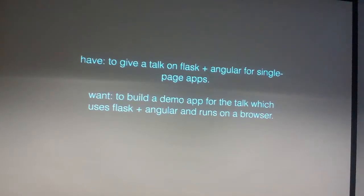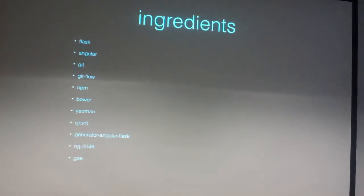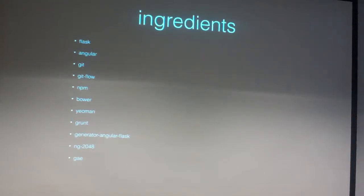I'm going to walk you through what I did and then show you the app at the end. In building this, I used Flask and Angular, also Git and GitFlow. For tools, I used NPM, Bower, and Grunt. I used Yeoman for the first time, which is a cool tool for generating templates of apps in Node.js, and a template called Generator Angular Flask, because I assumed I was not the first person who wanted to do this.